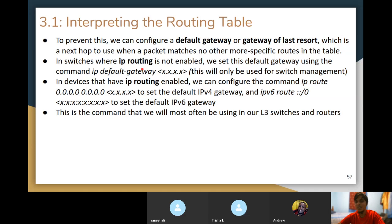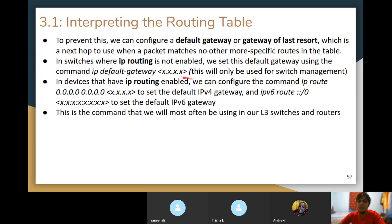To prevent dropping unmatched packets, we can configure a default gateway — also called a gateway of last resort — which is a next hop to use when a packet matches no other more specific routes. This is the same concept as a default gateway for a host: if you don't know where to send a packet, send it to this router and he'll figure it out. For switches where IP routing is not enabled, we configure this using the command 'IP default-gateway' followed by the IP address. This is used only for switch management — for example, when SSH-ing into a switch from a different network.